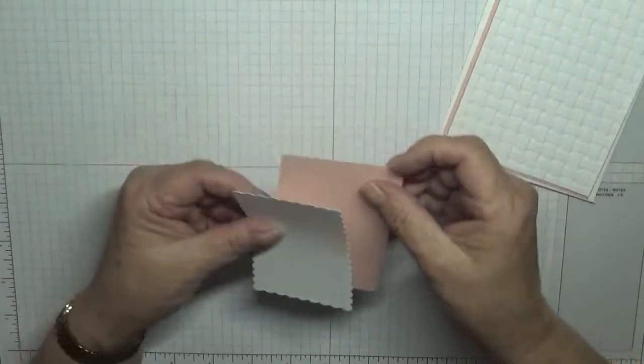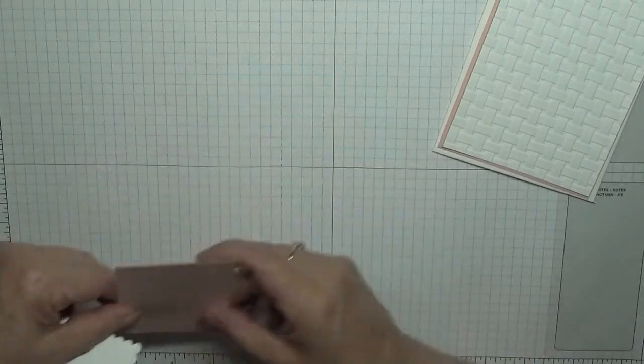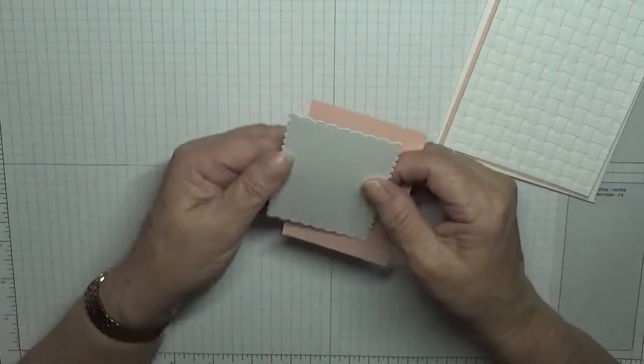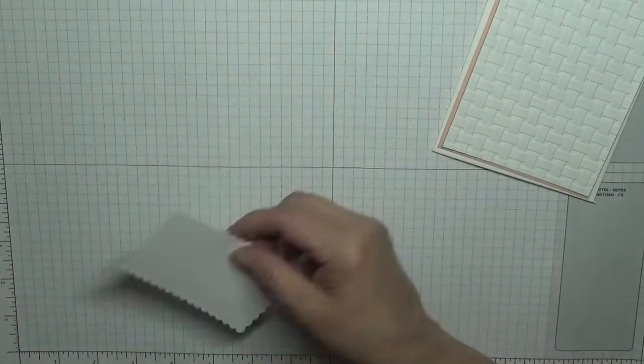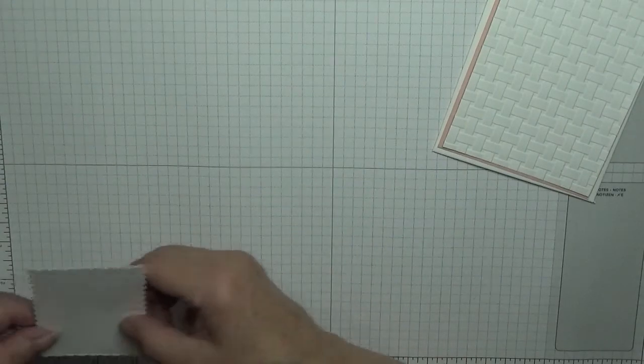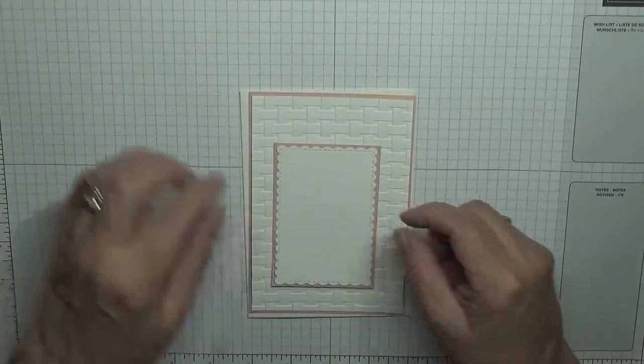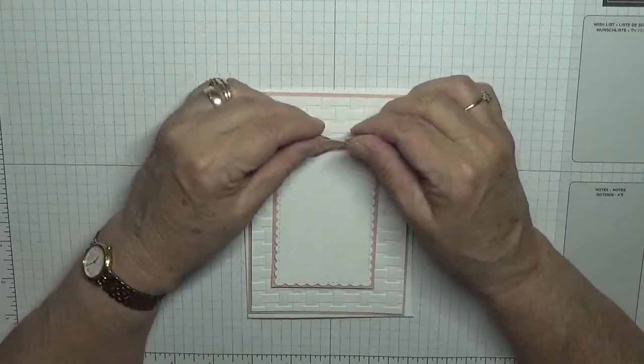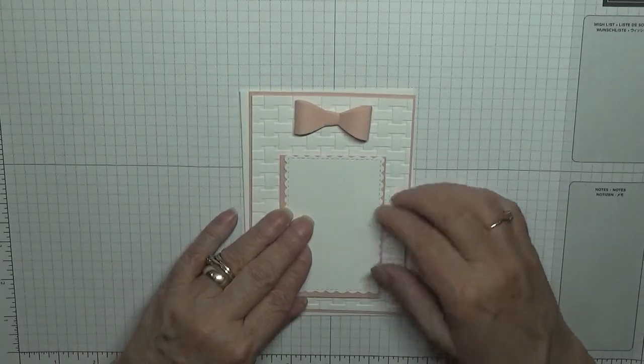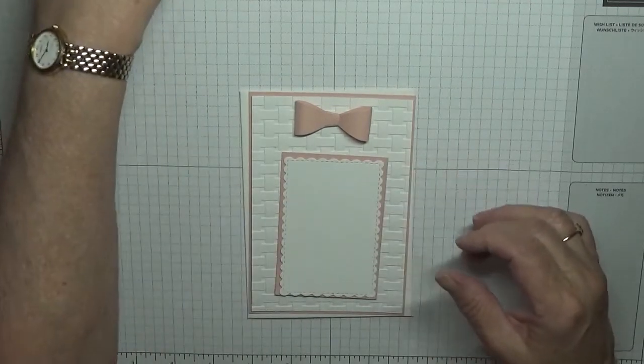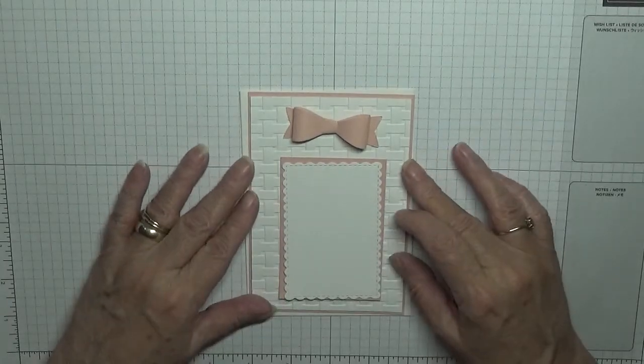I've also got a piece of Blushing Bride at three and five eighths by two and a half, and then from the Stitch So Sweetly Dies I have cut a piece, the third one I think it is, three and a half by two and a quarter. That was sitting there so nice. I've already made the bow. The ribbon I've got is actually very pale pink and I haven't got no Blushing Bride pink, and the tails which I might just leave like that. I think that'll look nice.